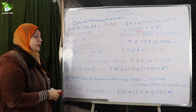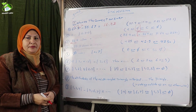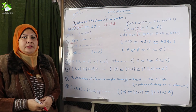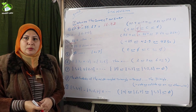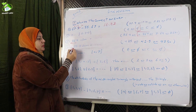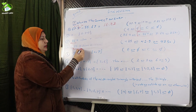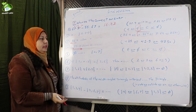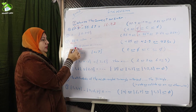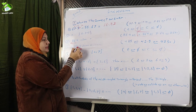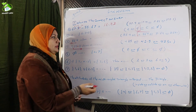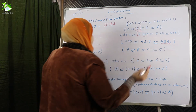Number four: 4.25 times one thousand. When multiplying any decimal number by one thousand, we should move the decimal point to the right three places. So the result will be four thousand two hundred fifty.